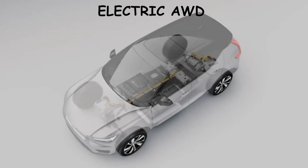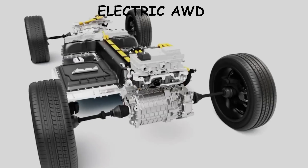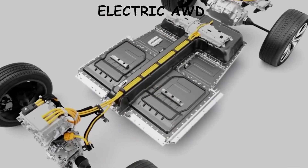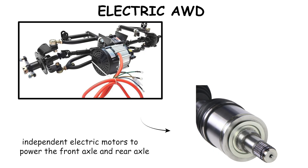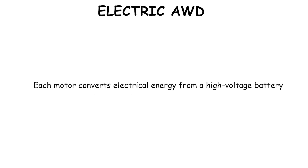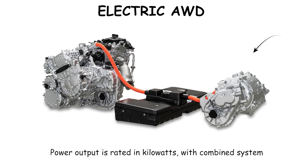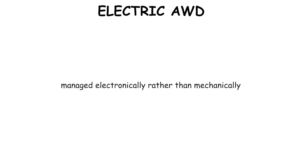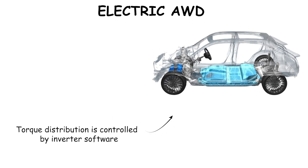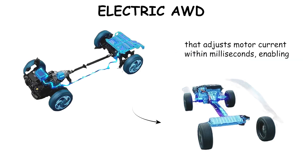Electric All-Wheel Drive and dual-motor electric vehicle drivetrains use two independent electric motors to power the front axle and rear axle without a mechanical transfer case. Each motor converts electrical energy from a high-voltage battery, typically 350 to 800 volts, into rotational force measured in newton meters. Power output is rated in kilowatts with combined system output managed electronically. Torque distribution is controlled by inverter software that adjusts motor current within milliseconds, enabling precise traction control and yaw stability.